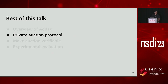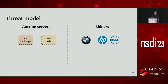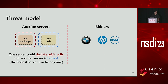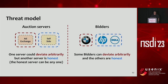Now I'll describe the private auction protocol we designed for real-time bidding. We assume that one auction server can deviate from the protocol arbitrarily, and we assume the other server is honest and does not collude with it. We don't need to know which server is honest beforehand. We also assume some bidders may deviate arbitrarily, but a small number of bidders must follow our protocol.